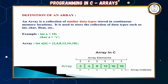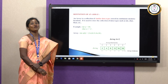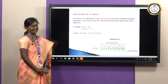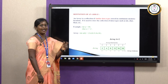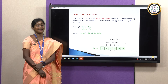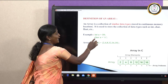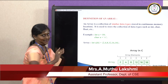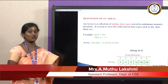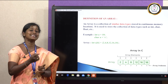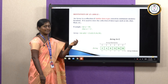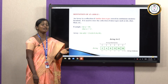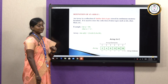An array is a collection of similar data types stored in a continuous memory location. Normally in C, we declare a variable as int a = 10, meaning the value 10 is assigned to variable a. But in arrays, we can store multiple values in a single variable — for example, int a[6] with 6 values assigned continuously.